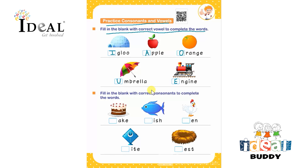Next: fill in the blank with correct consonants to complete the words. First picture is of a cake — it starts with C: C, A, K, E — cake. Next is a fish — F, I, S, H. Next is a hen — starting with H. Next is a kite — starting with K. The last one is nest — starting with N. They should read out all the spellings to become thorough for future reference. Thank you.